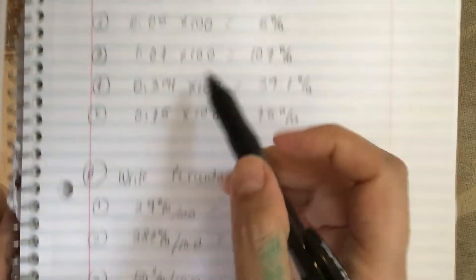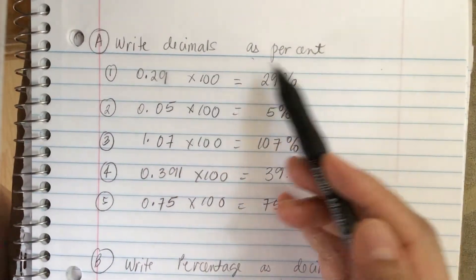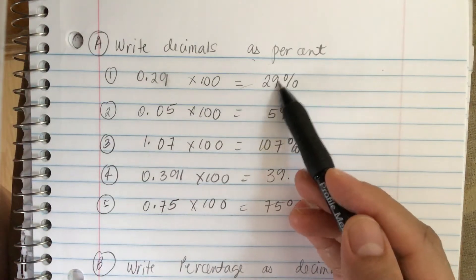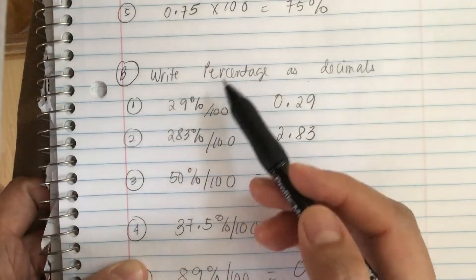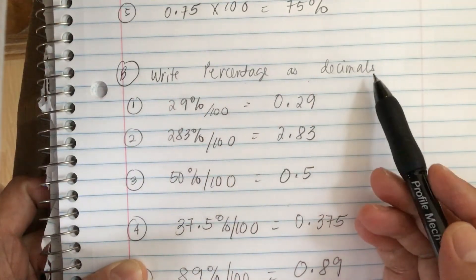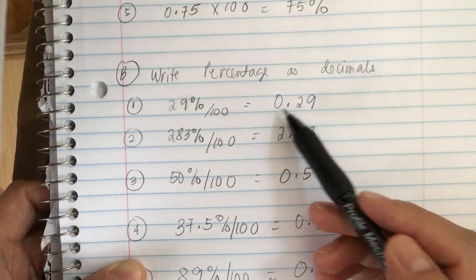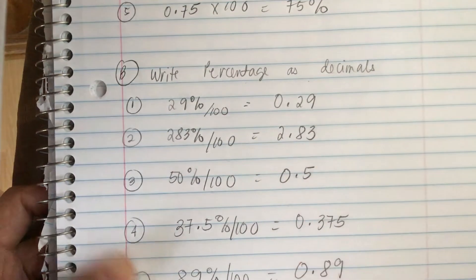So when we change decimals to percent, we multiply by 100 and we get the percent equivalent. And when we go from percentage to decimals, we divide it by 100 to get the equivalent decimals.